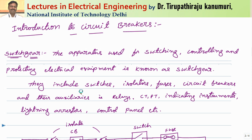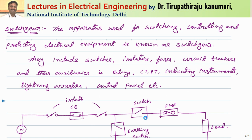Switchgear includes different equipment used for the purpose of either switching or controlling, such as switches, isolators, fuses, and circuit breakers, along with their auxiliaries such as relays, CT, PT, indicating instruments, lightning arrestors, control panels, etc.